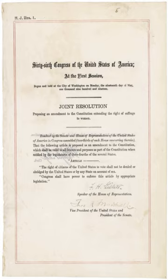The Congress, whenever two-thirds of both houses shall deem it necessary, shall propose amendments to this Constitution, or, on the application of the legislatures of two-thirds of the several states, shall call a convention for proposing amendments, which, in either case, shall be valid to all intents and purposes, as part of this Constitution, when ratified by the legislatures of three-fourths of the several states, or by conventions in three-fourths thereof, as the one or the other mode of ratification may be proposed by the Congress, provided that no amendment which may be made prior to the year 1808 shall in any manner affect the first and fourth clauses in the ninth section of the first Article, and that no state, without its consent, shall be deprived of its equal suffrage in the Senate.